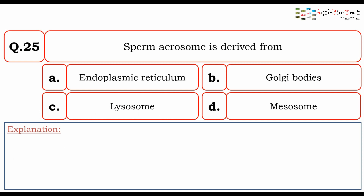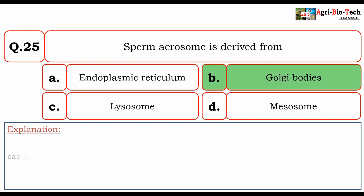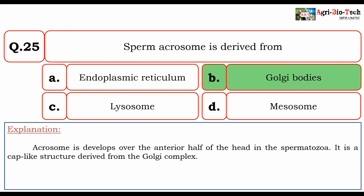Sperm acrosome is derived from: A. endoplasmic reticulum, B. Golgi bodies, C. lysosome, D. mesosome. The correct option is B. Golgi bodies. Acrosome is developed over the anterior half of the head in spermatozoa. It is a cap-like structure derived from the Golgi complex.